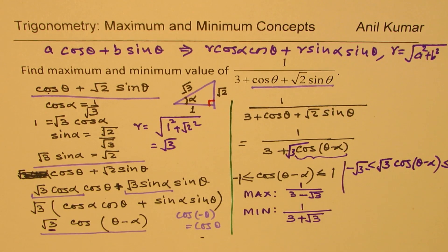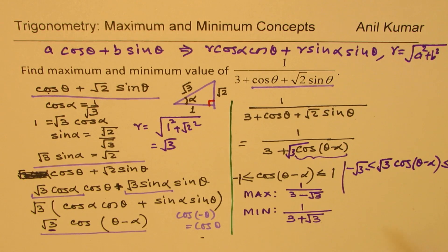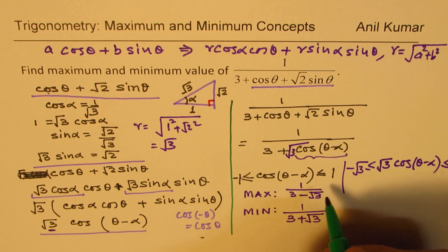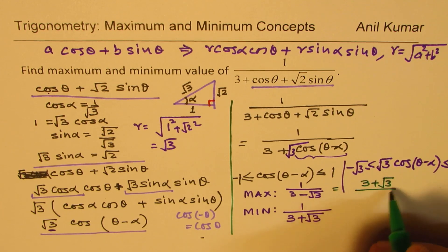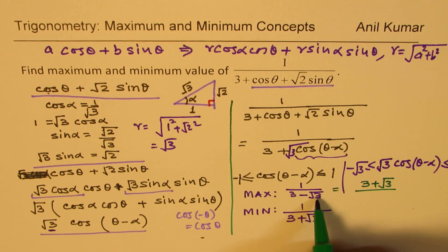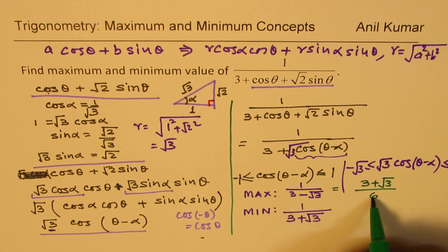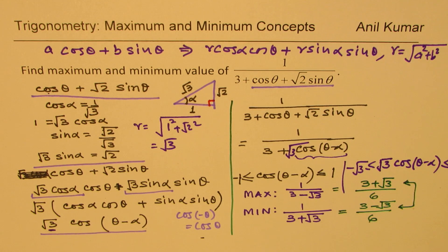Sometimes in multiple choice questions these values may be rationalized. Rationalizing 1/(3 − √3) by multiplying numerator and denominator by (3 + √3) gives (3 + √3)/(9 − 3) = (3 + √3)/6. The minimum value rationalized is (3 − √3)/6. Either form could appear as a choice.